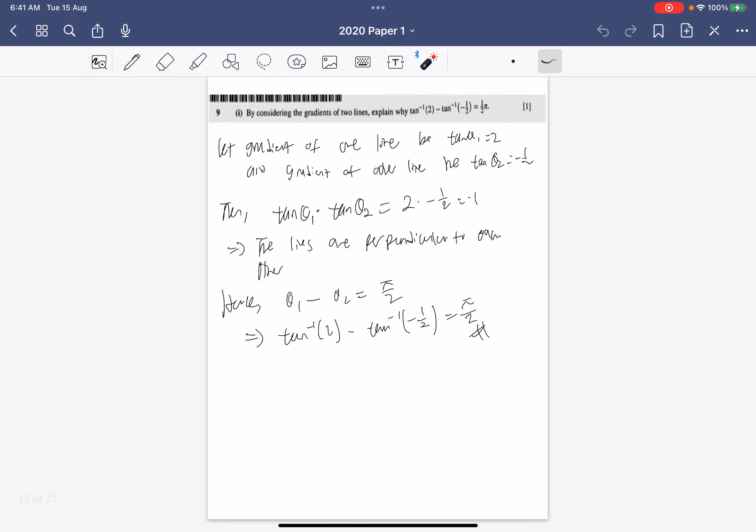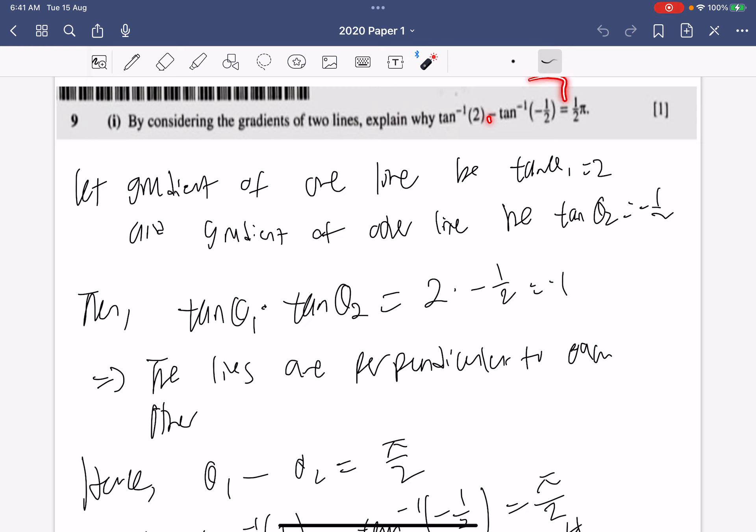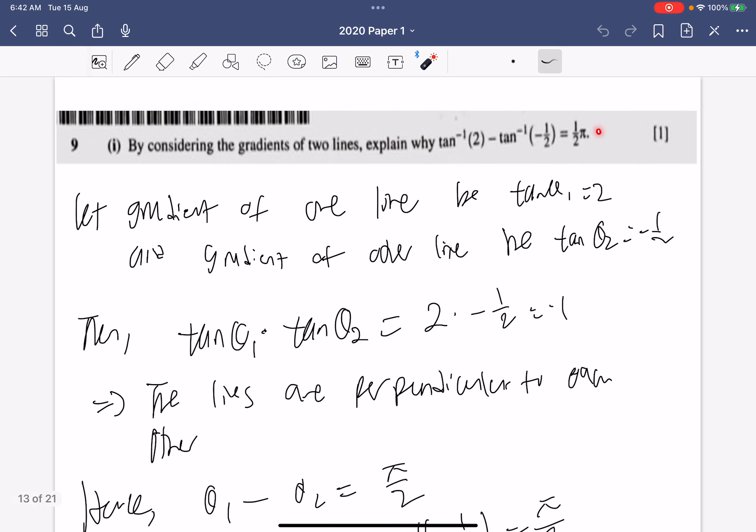Now for question 9, we're supposed to consider the gradients of two lines and explain why the tangent inverse of 2 minus the tangent inverse of minus half equals to pi over 2. So this is one of the trickier questions and we're supposed to recognize that okay, so what's pi over 2? Pi over 2 is like 90 degrees and gradient is like the slope of a tangent. So that means when we draw two tangent lines, when you introduce the 90 degree somewhere, so that means we need like perpendicular lines. That's how you're supposed to think about it.